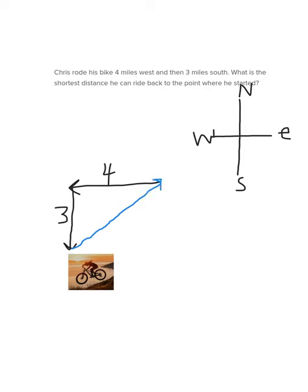And as you can tell, drawing a picture really helps with understanding these problems. And I recommend that you draw a picture. Anyway, to get to the point where Chris started, we can use the Pythagorean theorem. This is a leg right here. This is a leg right here. And the distance that we are trying to calculate is C, the hypotenuse. So I can write down the Pythagorean theorem. A squared plus B squared equals C squared.